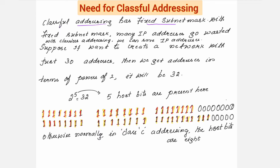Classful addressing has a fixed subnet mask. Whatever I wrote in the table under the heading is the default mask, and that subnet mask means the same thing — it has a fixed value for the default mask. With a fixed subnet mask, many IP addresses go wasted. So by using classless addressing, we can save IP addresses.